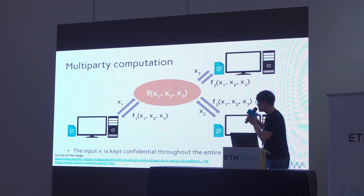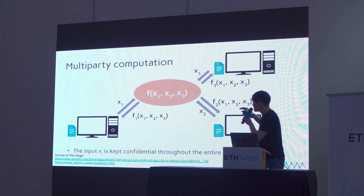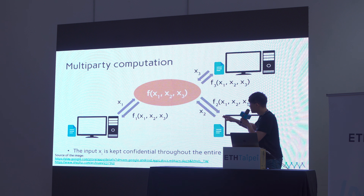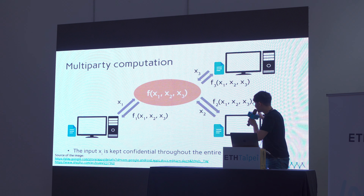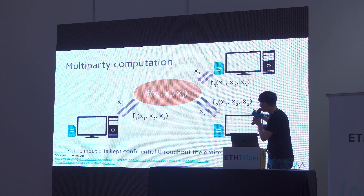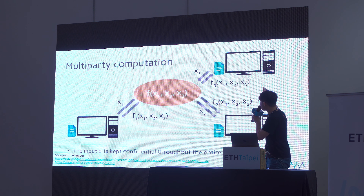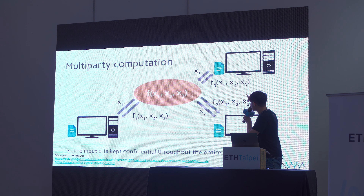After MPC, P1 only learns the value f(x1, x2, x3), P2 only learns f2, and P3 only learns f3(x1, x2, x3). Each party learns only the output of the function, not the others' secret inputs.